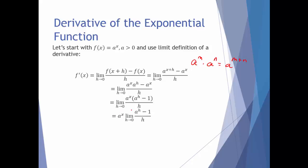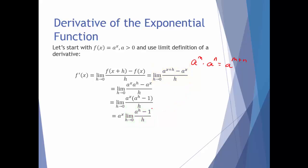So I've pulled the a to the x out front, which leaves me with the limit as h approaches 0 of a to the h minus 1 all over h. Comparing this with the original limit definition, they're very similar with one notable difference — this limit has x equal to 0. If I plug in x equals 0, I get a to the h minus a to the 0, which is 1, meaning this is the derivative specifically when x equals 0, i.e., f prime of 0.